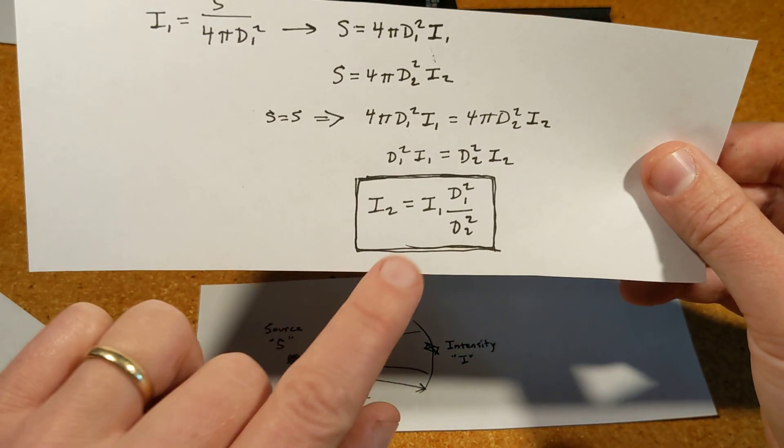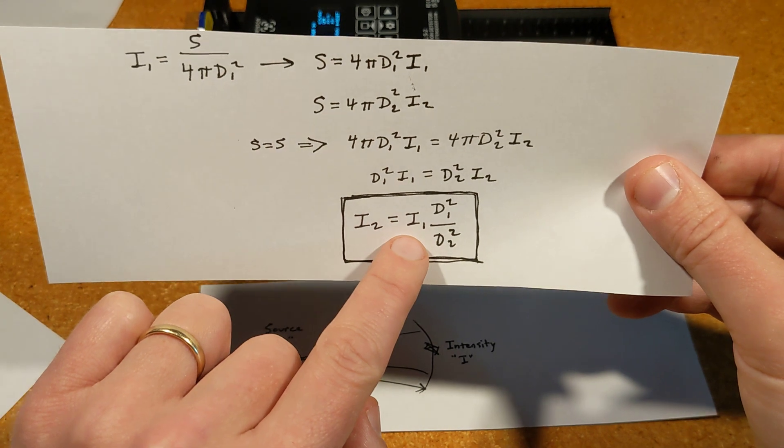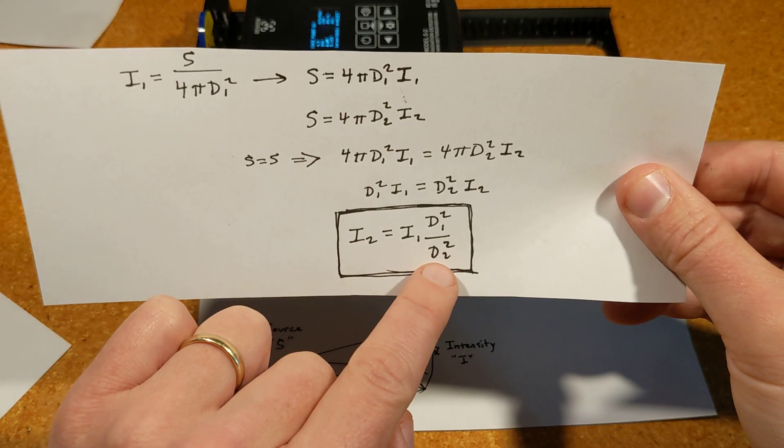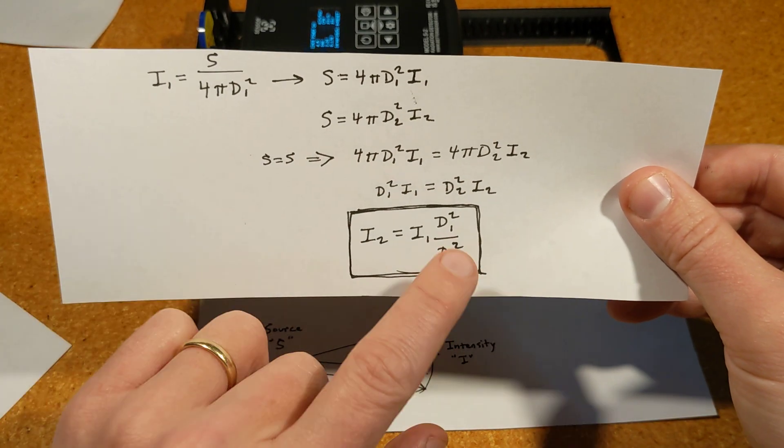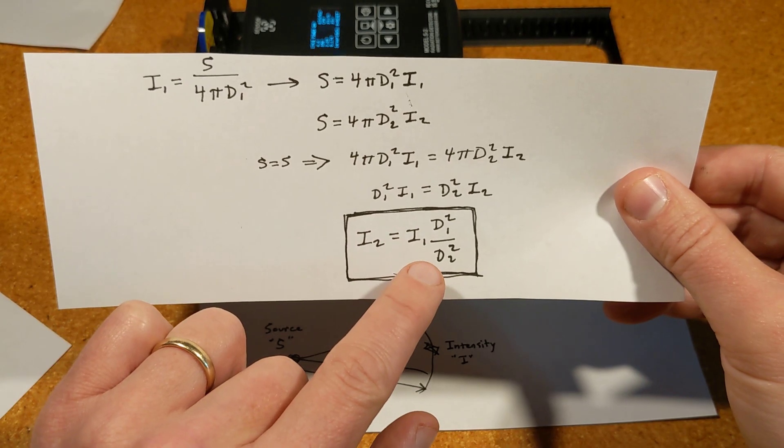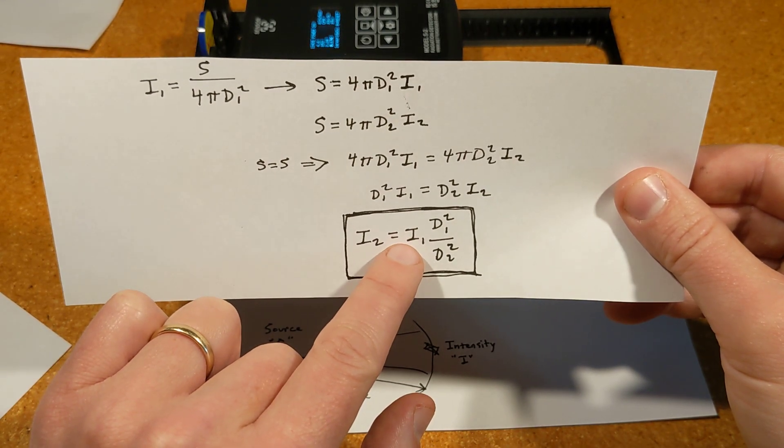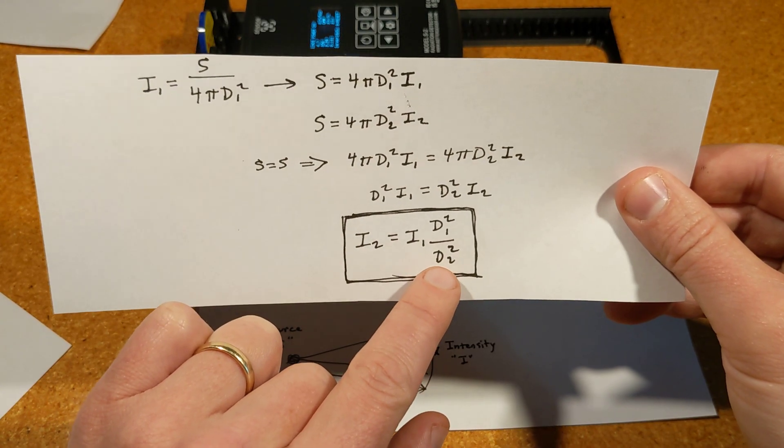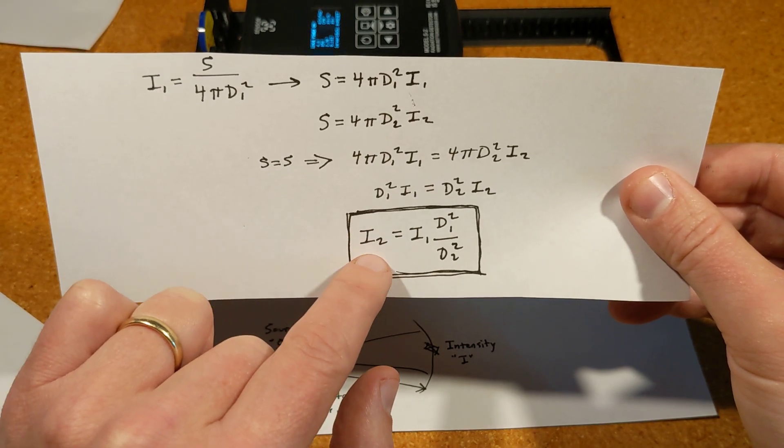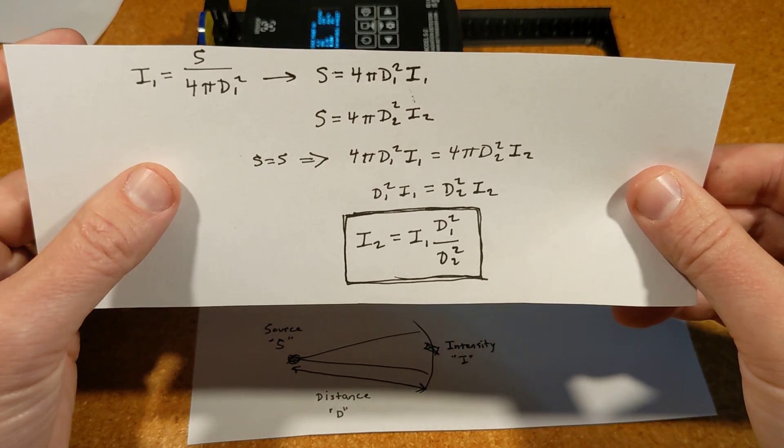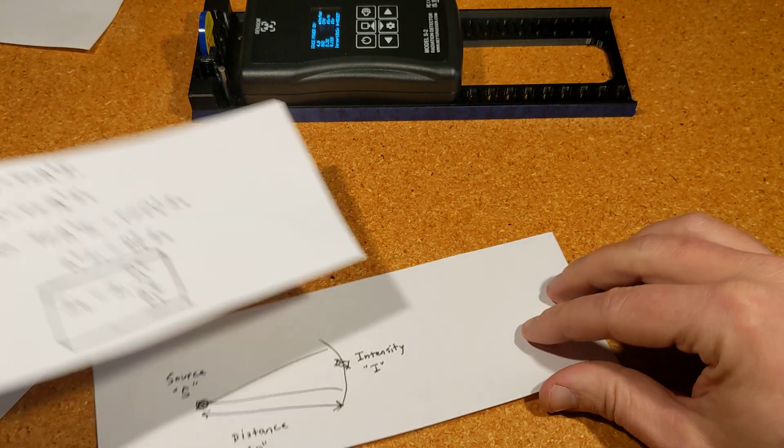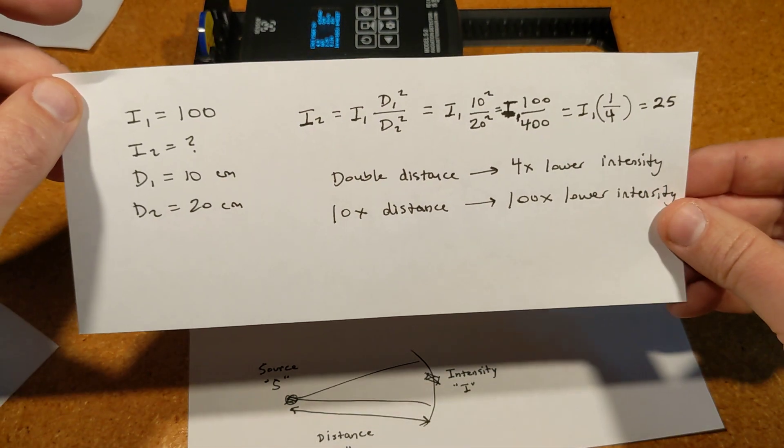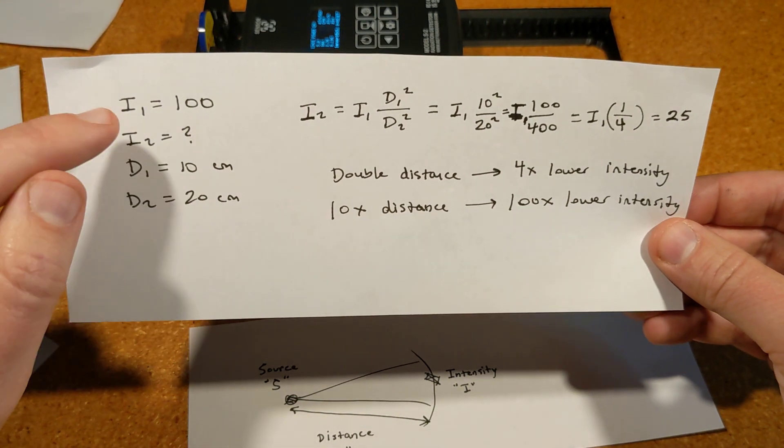Rearranging that, we basically get the intensity at position two equals intensity at position one times distance at one squared over distance at two squared. With this formula, if you know at some measurement position how far away it is and what you're measuring there - that could be a dose rate or count rate - and then you go to a second distance, you can estimate what that new intensity is as you go further away from a source.